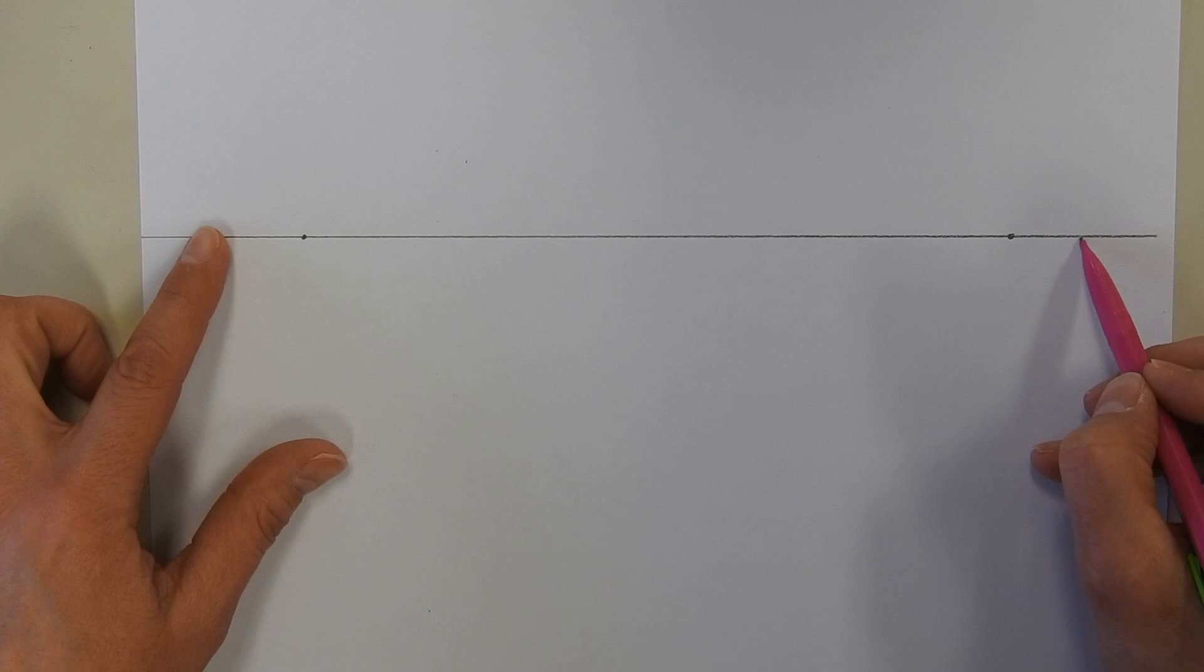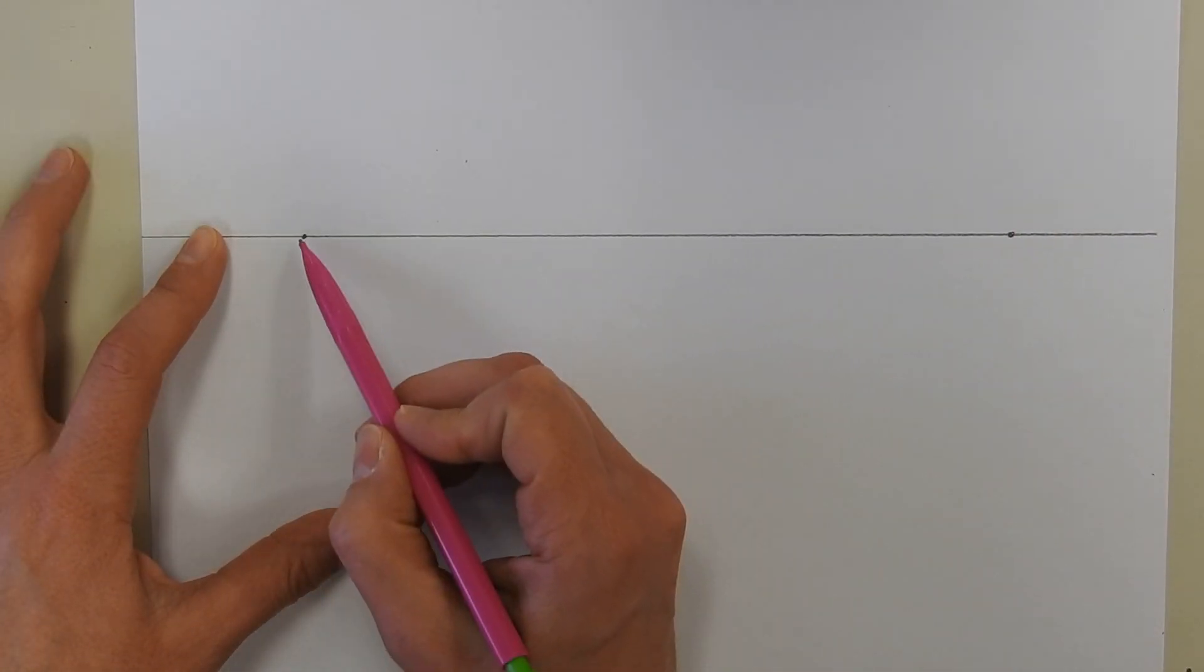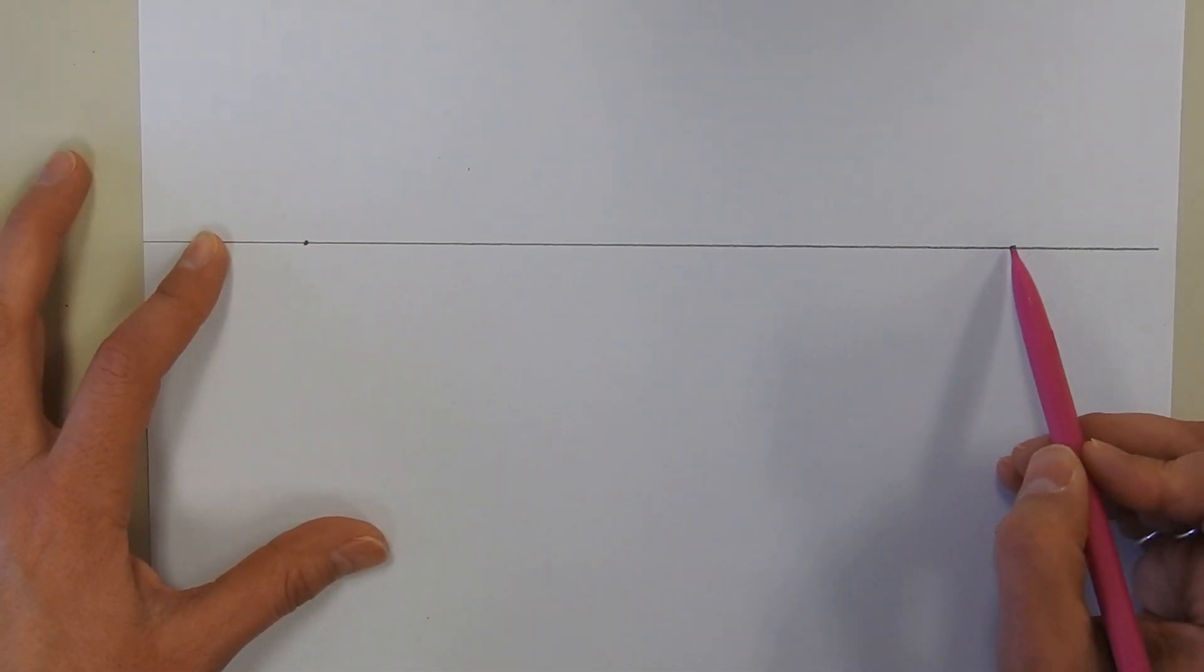Your next exercise is practicing two-point perspective below, on, and above the horizon line. Remember this is our horizon line, and in two-point perspective we need two vanishing points. So I've put one here and one here.